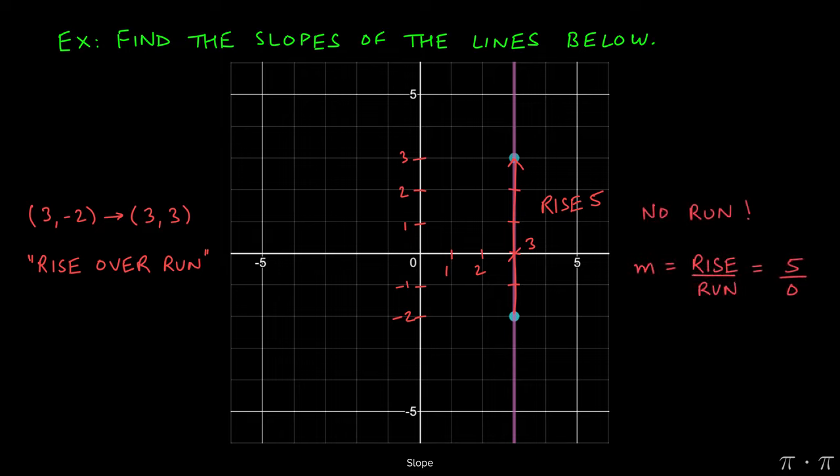Slope, as before, is given by rise over run. Since we're rising by five units, I placed that in the numerator. Since we're running by none, I placed a zero in the denominator. Now, hopefully you remember division by zero is illegal. We can't do it. It always gives us an undefined number.